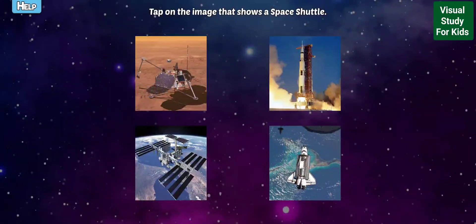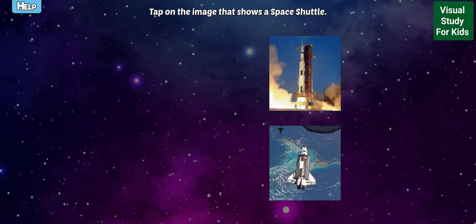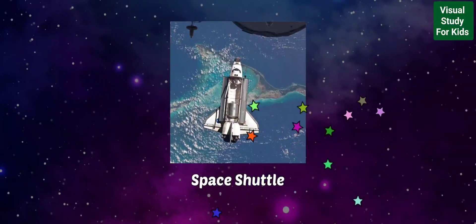Tap on the image that shows a space shuttle. Keep trying! So close! The space shuttle was a reusable spacecraft in service between 1981 and 2011. It was able to transport people and cargo into Earth's orbit and then return back to the ground to be launched again.